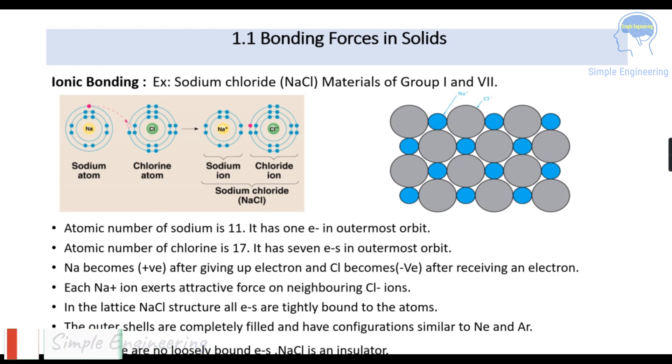Each Na+ ion exerts attractive force on neighboring Cl- ions. In the lattice NaCl structure all electrons are tightly bound to the atoms. The outer shells are completely filled and have configurations similar to neon and argon. Since there are no loosely bounded electrons, NaCl is an insulator.